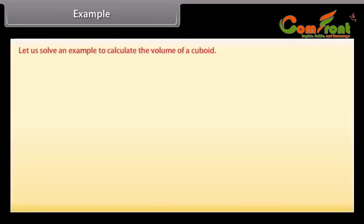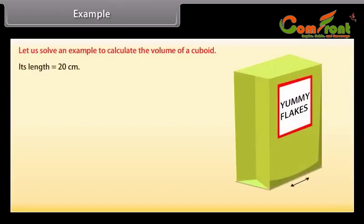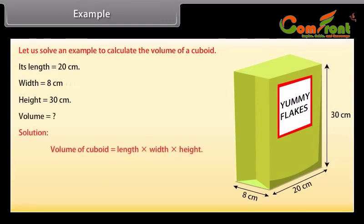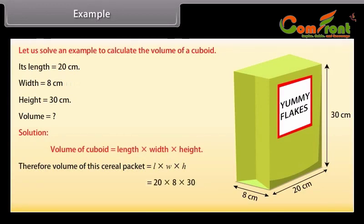Example: Let us calculate the volume of a cuboid. Look at this cereal packet. Its length is 20 cm, width is 8 cm, and height is 30 cm. We have to find its volume. We know that the volume of a cuboid is length × width × height. Therefore, volume = L × W × H = 20 × 8 × 30 = 4,800 cm³.